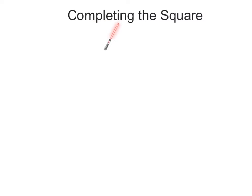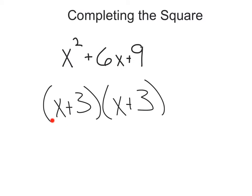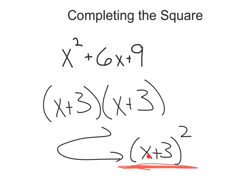So completing the square — first we need to understand what the square is referring to. There's this thing called the perfect square trinomial, like this. If we factor this, we're going to get x plus 3 times x plus 3, which is the same as x plus 3 squared. Hence we call this the square.